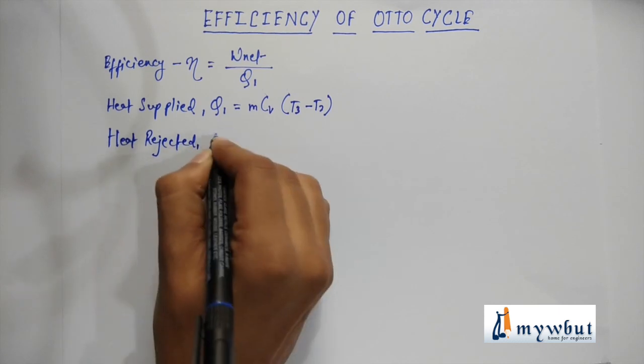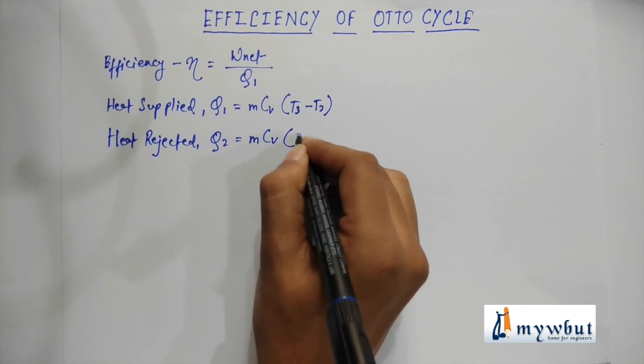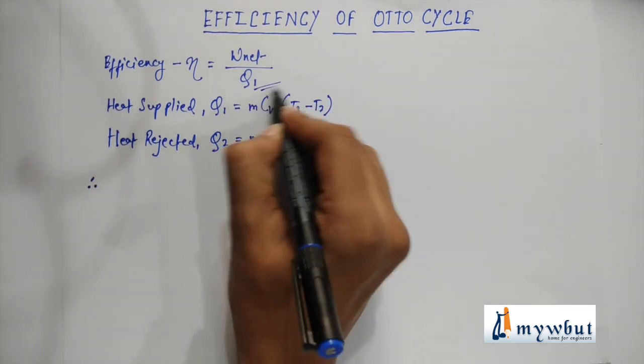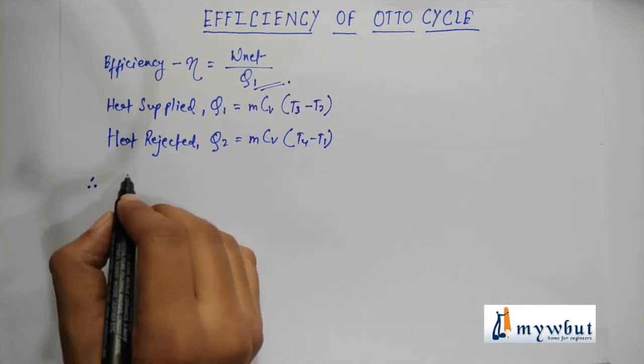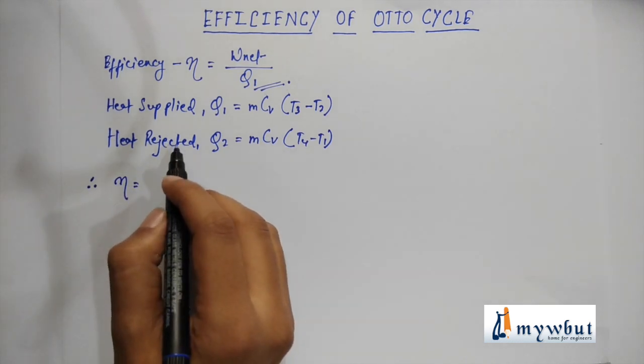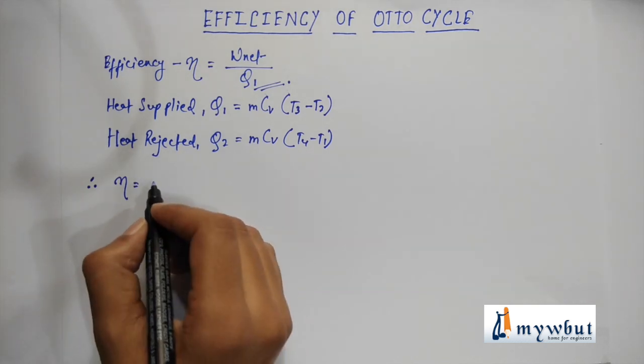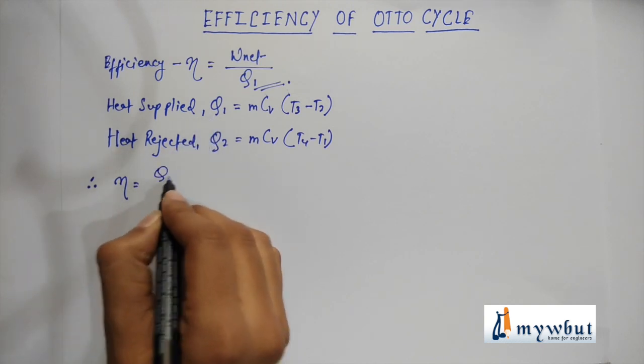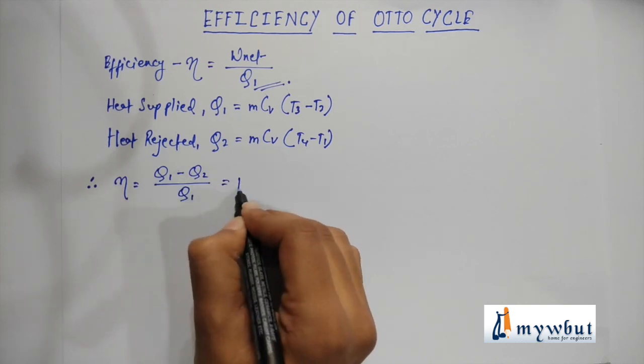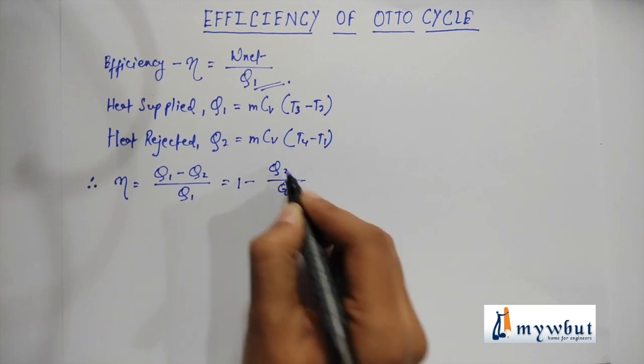Therefore, from the equation of efficiency, we can say that eta will be equal to the heat rejected subtracted from heat supplied divided by heat supplied. That is Q1 minus Q2 by Q1, that's equal to 1 minus Q2 by Q1. If we put these equations in place of Q1 and Q2, we get eta is equal to 1 minus m Cv T4 minus T1 by m Cv T3 minus T2.